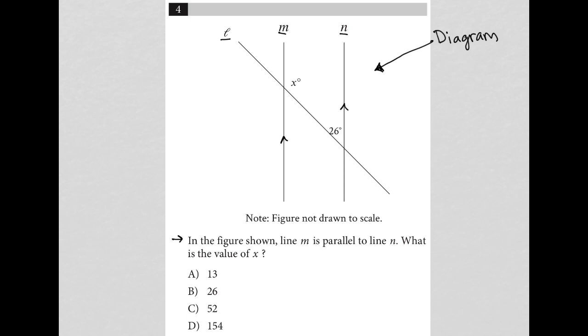So anytime you have two parallel lines with a transversal, which is this line L, which I'll roughly trace through here, we end up having angle measure relationships.